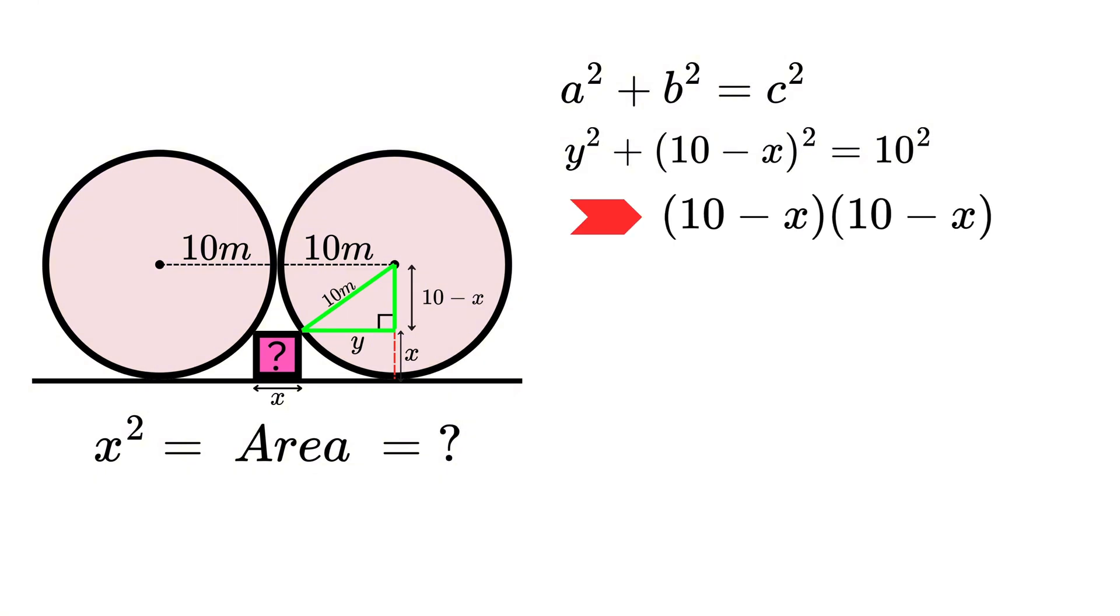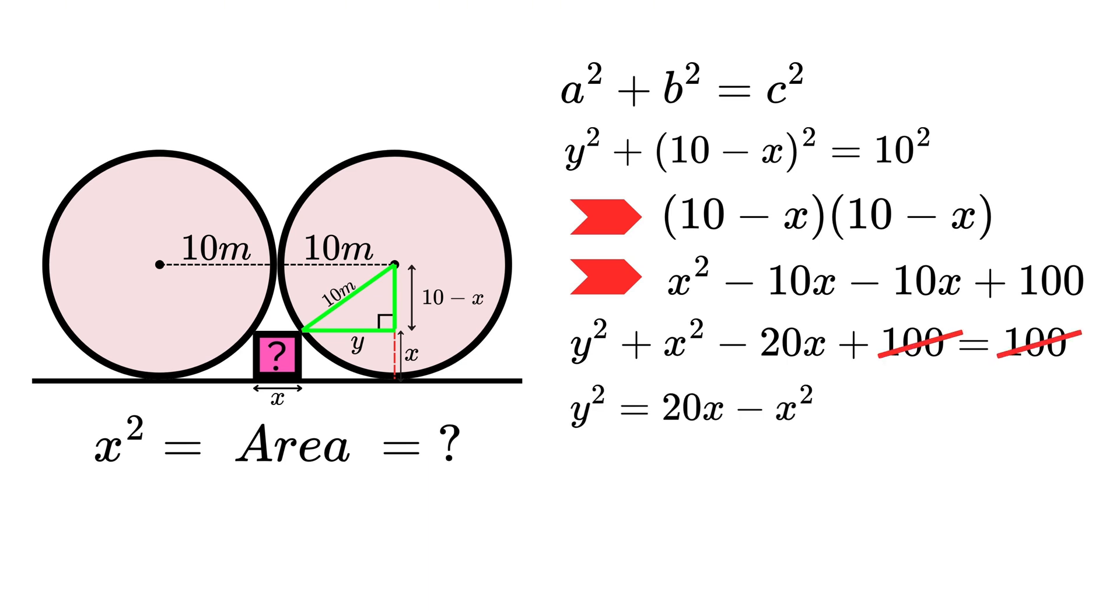Putting that back into our equation, we have y² + x² - 20x + 100 = 100. We can immediately subtract 100 from both sides and rearrange to find that y² = 20x - x², meaning y = √(20x - x²). Now that we have a value for y in terms of x, we can add some more lines to our diagram to create another equation.